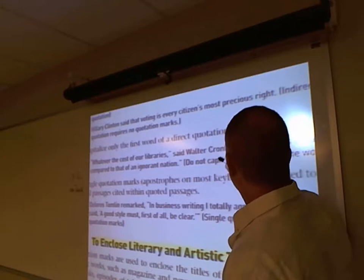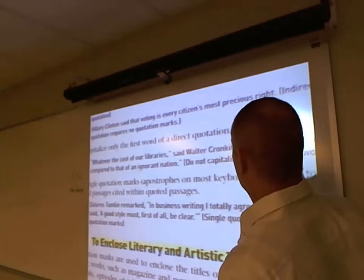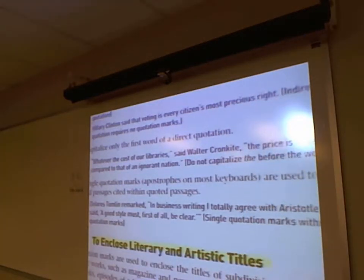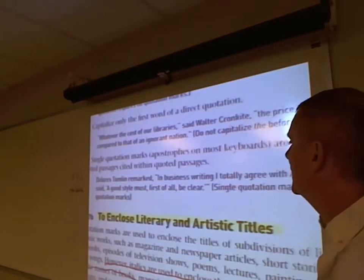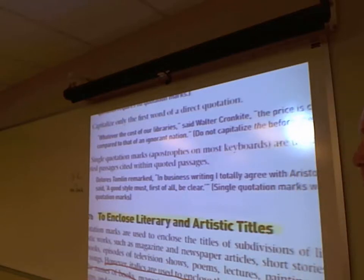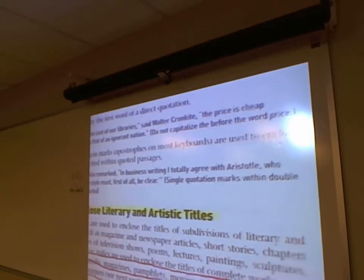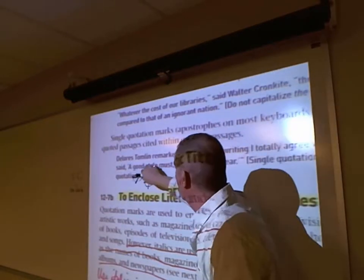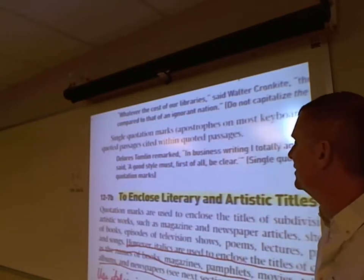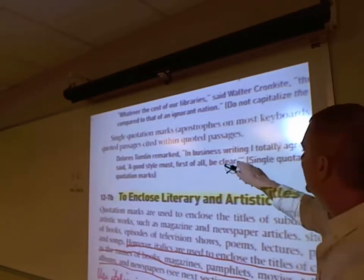Single quotation marks are quotes within a quote. 'Dolores Tomlin remarked, "In business writing, I totally agree with Aristotle who said, 'A good style must, first of all, be clear.'"' — for every left apostrophe you must have a right apostrophe, and for every left quote you must have a right quote. The period goes inside the innermost quotation mark, and the apostrophe ends that inner quote, then double quotes end the full quote.